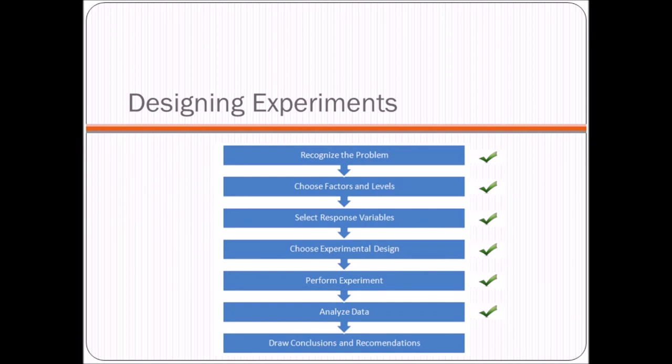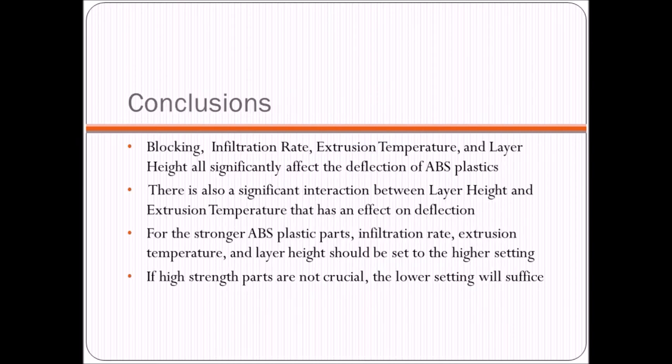Okay, so we've successfully analyzed the data. Now it's time to draw some conclusions and provide recommendations. So what can we conclude from this experiment? Well, we found out that blocking, infill rate, extrusion temperature, and layer height all significantly affected the deflection of ABS plastic. And therefore, they all affected the strength. There was also a significant interaction between layer height and extrusion temperature.